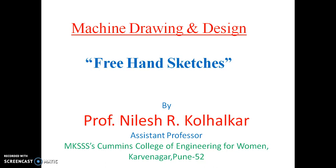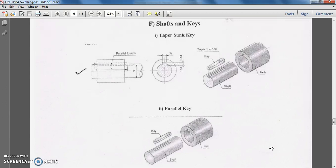The remaining machine elements that we will study today are different types of keys, different types of welded joints, and different types of springs. So let us start with the different types of shafts as well as keys.